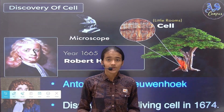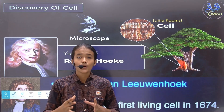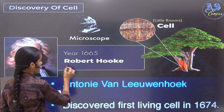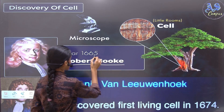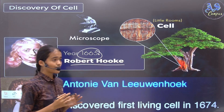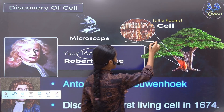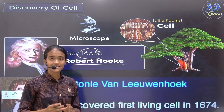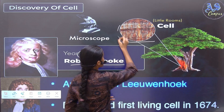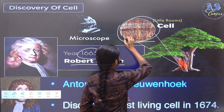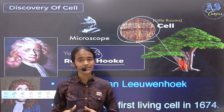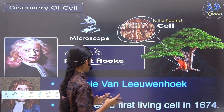In this slide we are going to discuss who discovered cell. Cell was first discovered by Robert Hooke in the year 1665. He took a bark and discovered the cell. He discovered the non-living cell of a bark and saw some little room-like structures. It was named cell because cell is a Latin word which means little room.